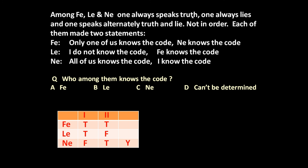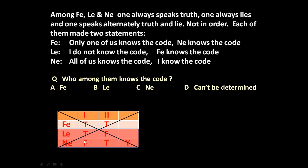The given conditions are: one always speaks truth, one always lies, and one speaks alternately truth and lie. Here Phi is true-true, Li is true-false, and Ni is false-true. Both Li and Ni are speaking alternately truth and lie, which is not permissible — only one of them can do that. So our assumption that Phi made two true statements is wrong.